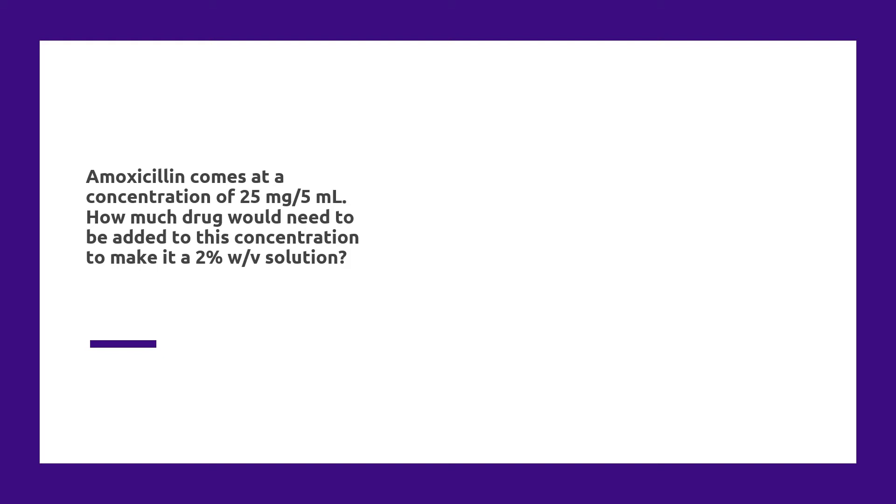But that being said, I think there is some good instruction to be provided here. So this question is stating that amoxicillin comes at a concentration of 25 milligrams per five milliliters. How much drug would need to be added to this concentration to make it a 2% weight per volume solution?